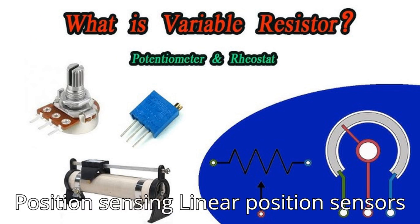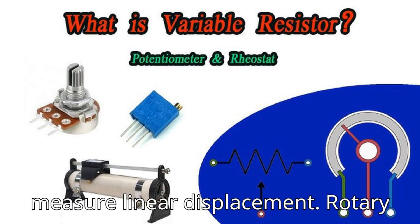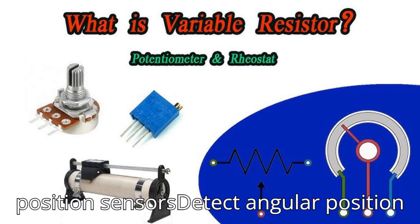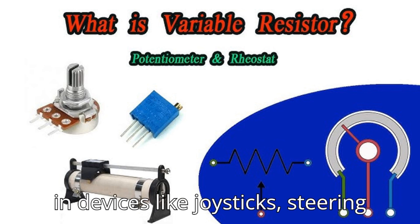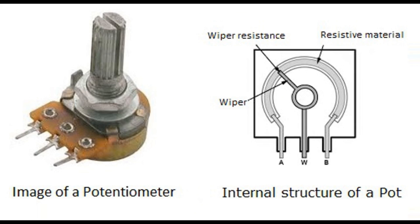Tone and balance adjustment involves modifying audio properties and balancing sound between left and right channels. Second, position sensing: linear position sensors are used in robotics or automation systems to measure linear displacement. Rotary position sensors detect angular position in devices like joysticks, steering wheels, and CNC machines.